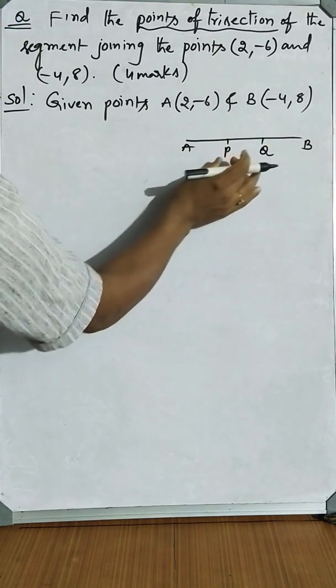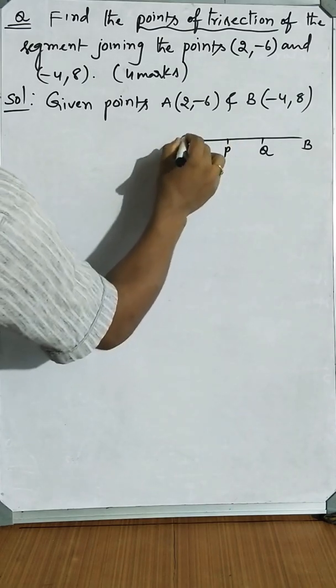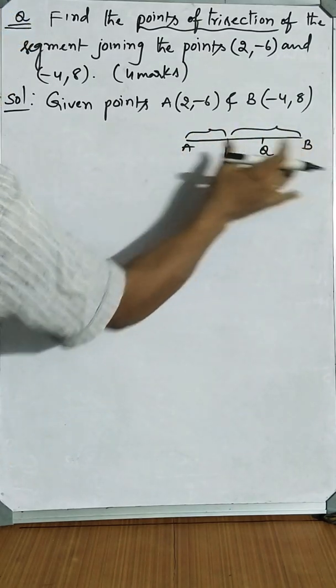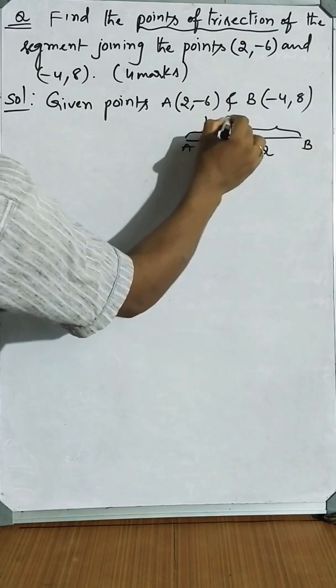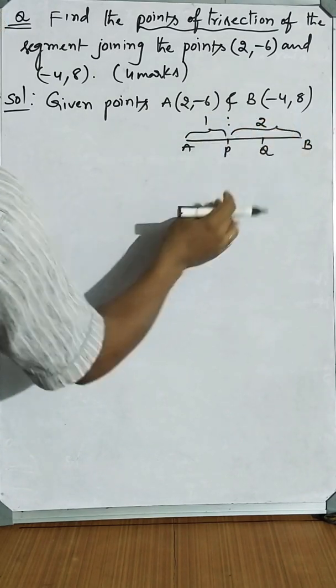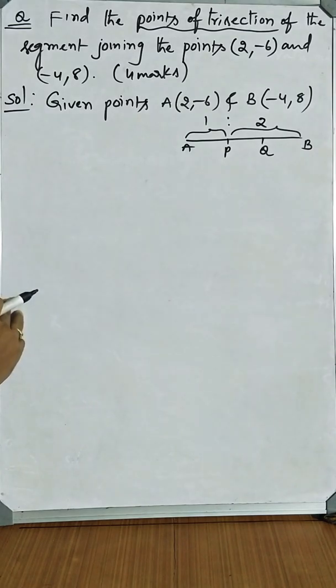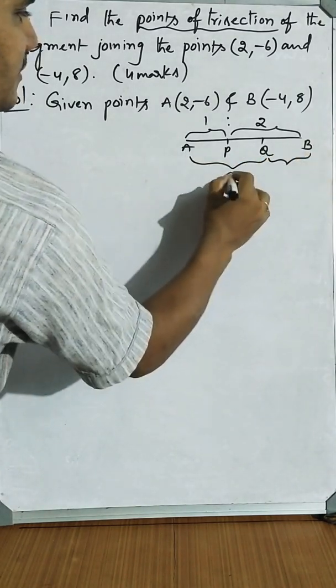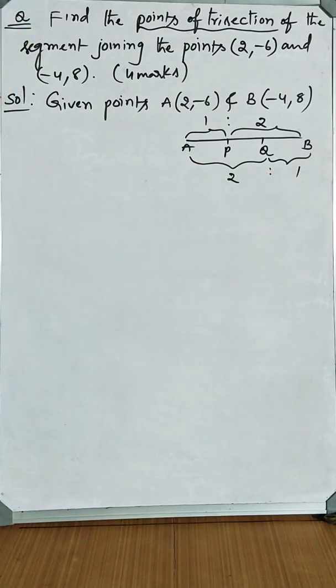Clearly this P divides the segment in 2 parts: AP is 1 unit and PB is 2 units. That means P divides in 1:2 ratio. Similarly, Q divides the segment in 2:1 ratio. It is enough to find the coordinates of P and Q. These two are the points of trisection.